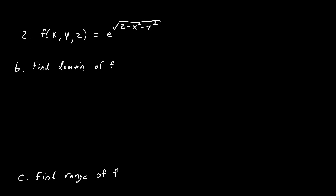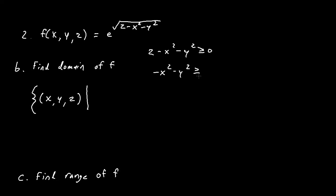For the domain of f, we use set notation for all ordered triples x, y, z. Since we cannot have a negative number under the radical, z minus x squared minus y squared must be greater than or equal to 0. Rearranging by isolating z and flipping the inequality when dividing by negative 1, we get x squared plus y squared must be less than or equal to z, or equivalently z is greater than or equal to x squared plus y squared.